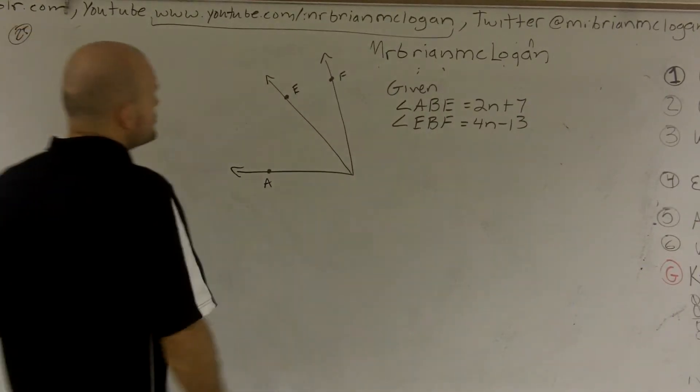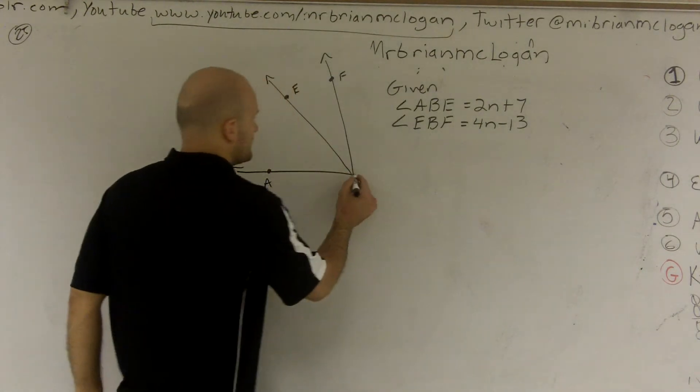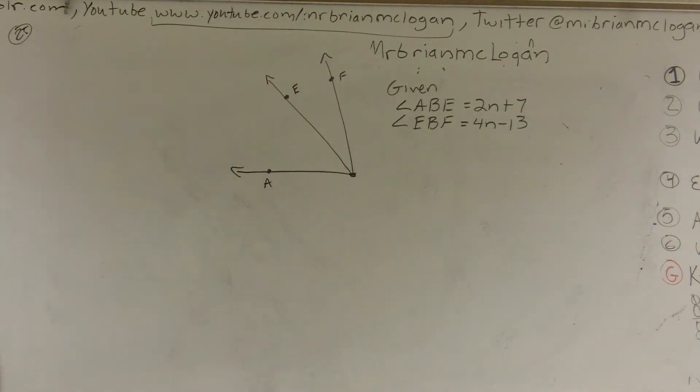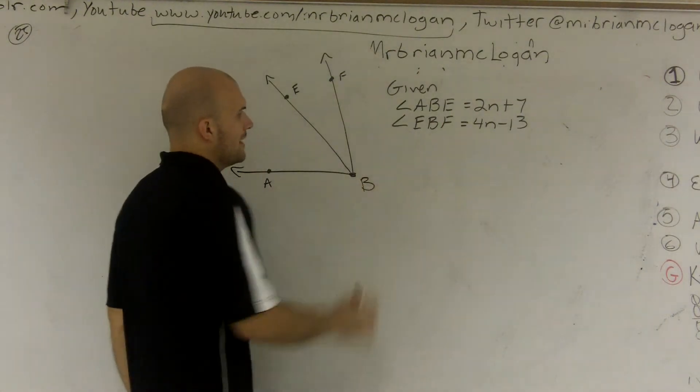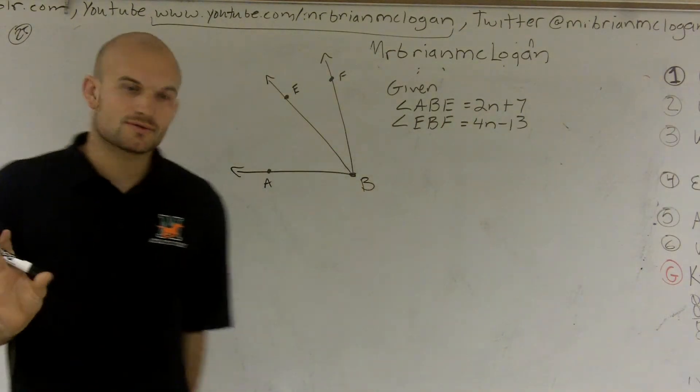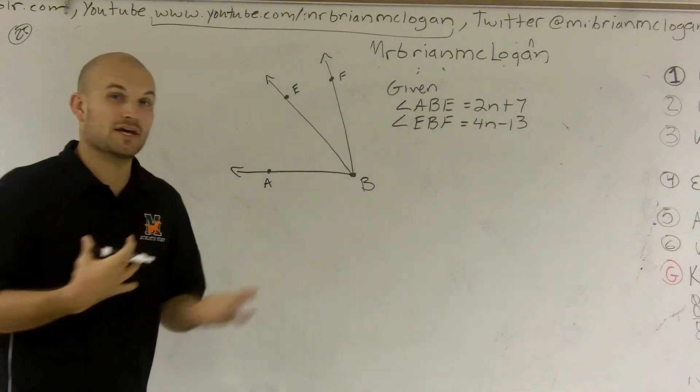All right, I'm given two angles. So here I have a little vertex, and I forgot what the vertex here was. B. Okay. So on this problem, I'm given two angles. Well, I'm given multiple angles, but I'm given the value of two angles.